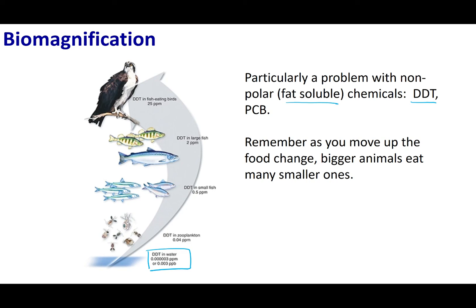What happened is bacteria and microorganisms started consuming the DDT. Because it's not water soluble, they could not excrete it. All the DDT started to accumulate in their fat storage. The concentration of DDT in the microbes themselves increased, going up to about 0.04 parts per million.